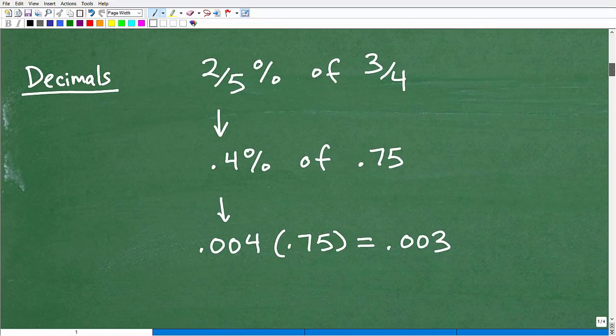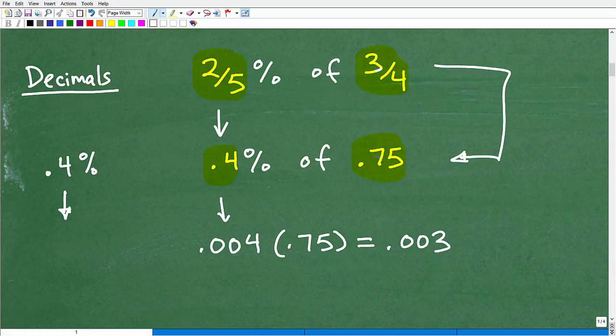All right, so let's first use decimals. So if you have a calculator, you can be like okay, two-fifths percent of three-fourths. Well, you can take your fractions and write them as decimals. So two-fifths is the same as 0.4. And three-fourths is the same thing as 0.75. So the equivalent problem here in decimals, we can go from fractions to decimals, is find 0.4% of 0.75. Well how do I do that?